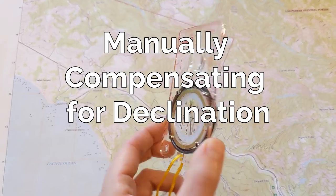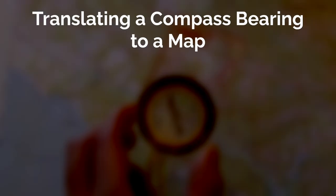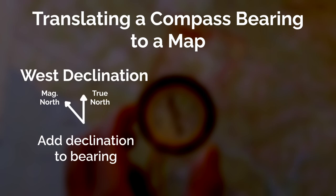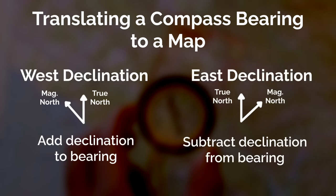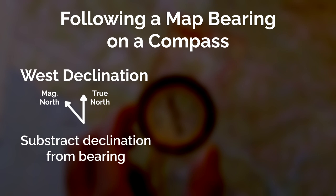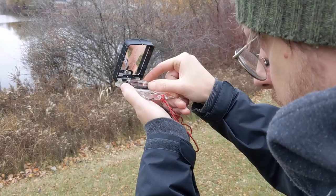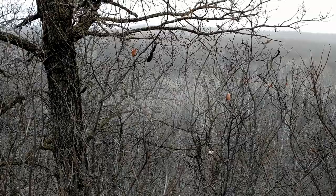Now let's suppose our compass does not have adjustable declination. In that case, we'll need to do a bit of arithmetic. When taking a bearing on our compass, we need to add the declination to our bearing if the declination is west, and subtract the declination if our bearing is east before we translate it to the map. We need to reverse this when following a bearing measured from our map: subtract the declination from the bearing when the declination is west, and add the declination when it's east. Although these are just simple addition and subtraction operations, it's easy to confuse them in the field, and it could have dire consequences if you get it wrong.